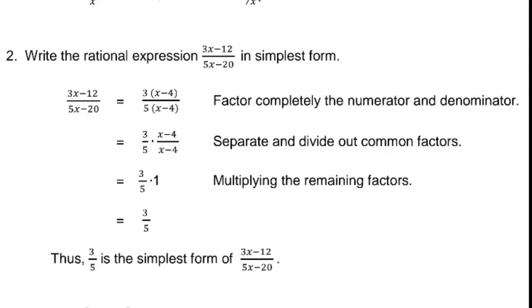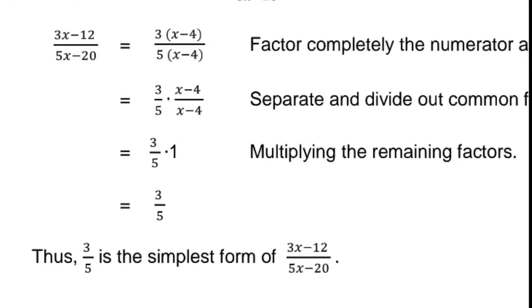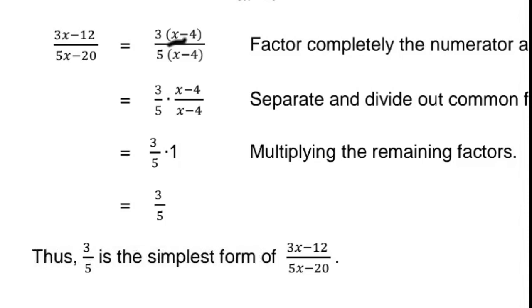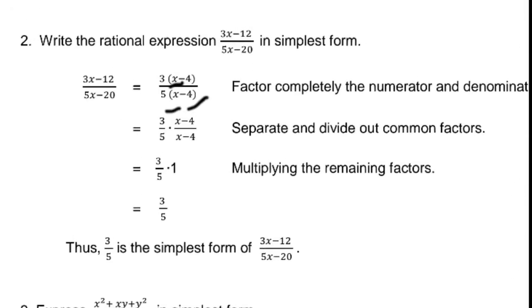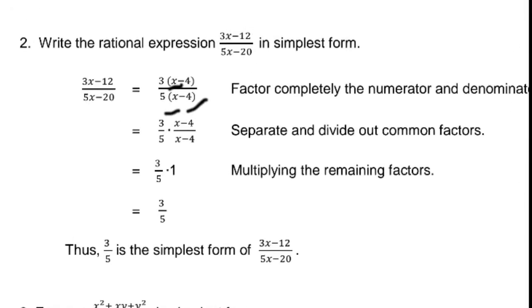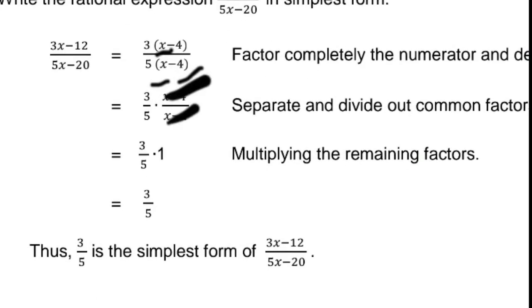Number 2: Write the rational expression 3x minus 12 over 5x minus 20 in simplest form. Factoring 3x minus 12, the GCF is 3, giving 3 times (x minus 4). For the denominator 5x minus 20, the GCF is 5, giving 5 times (x minus 4). The common factor in numerator and denominator is (x minus 4). So we have 3 over 5 times (x minus 4) over (x minus 4), and canceling (x minus 4), our answer is 3 over 5.